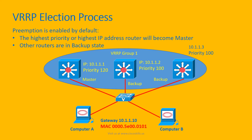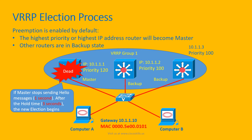In this group, this layer 3 switch has the highest priority, and therefore it will become master of the group, serving the clients. During operation, if the master goes down, the backup layer 3 switches continue to monitor for hello messages. The hello timer default is 1 second, and the hold time default is 3 seconds. If backups don't hear any hello message from the master, a new election process will begin.